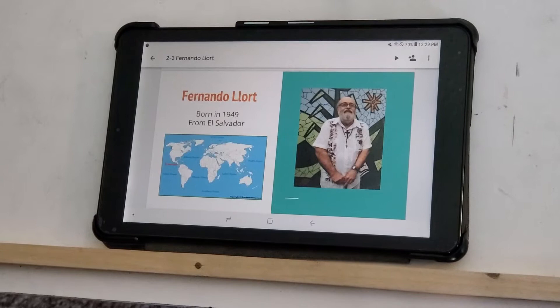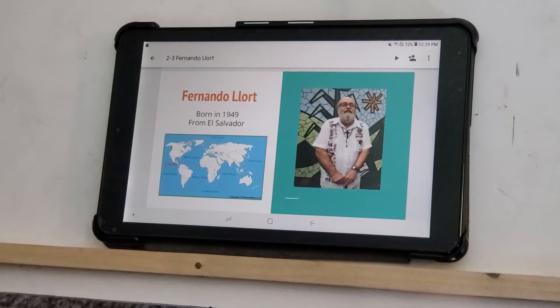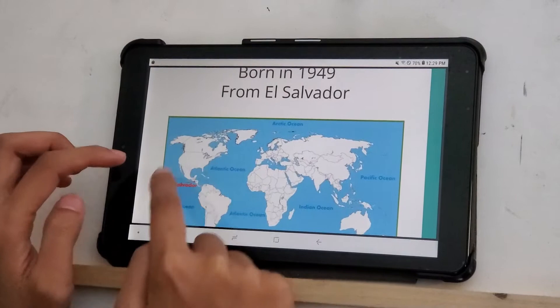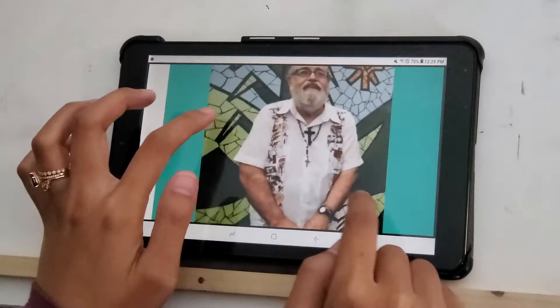Alright, this week we are looking at an artist named Fernando Yort. He was born in 1949 and he's from El Salvador, which is this teeny tiny country right here in red. I know that's really hard to see, but it is right there. And this is a picture of him on the right.